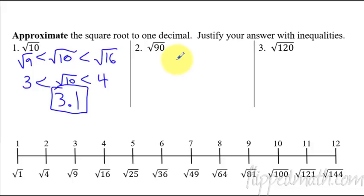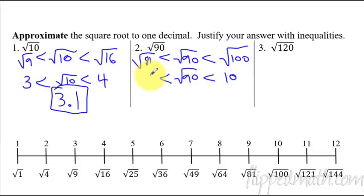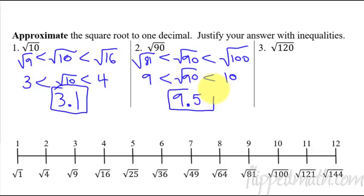Okay, so here let's do square root of 90. Square root of 90 is in between what two perfect squares? It's in between 81 and 100. So we put 81 here and 100 here, and the square root of 90 is in between 9 on the lower side and 10 on the upper side. So that means it is 9-point-something. 90 is right about the middle between 81 and 100 — not perfectly in the middle, but really close. So we could say 9.5, and that would be our answer. This is how you justify with inequalities.